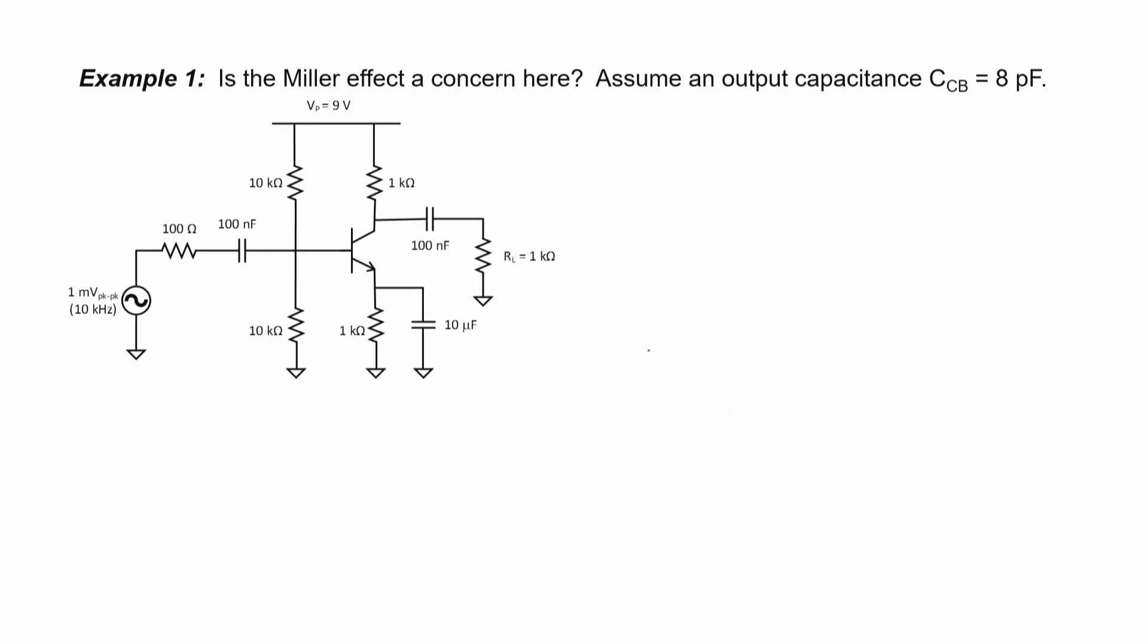Let's look at an example. In this example, we have a common emitter amplifier. We're told that this capacitor has a parasitic capacitance of 8 pF between the base and collector. That's the one we're worried about because we have an inversion of the signal between the base and the collector.